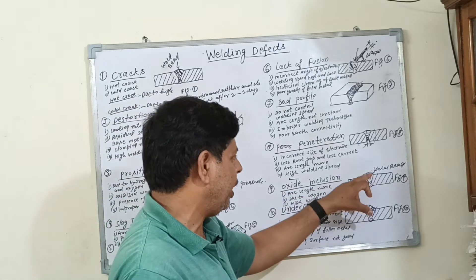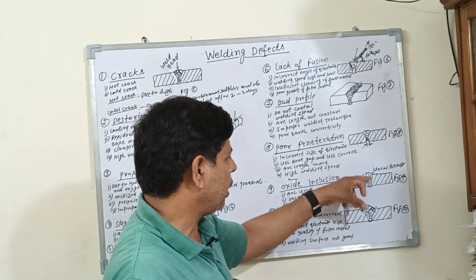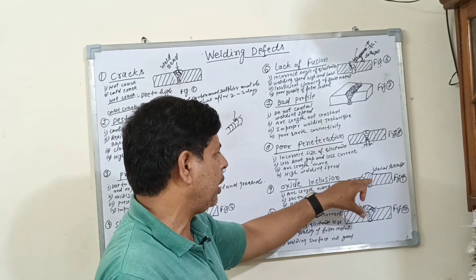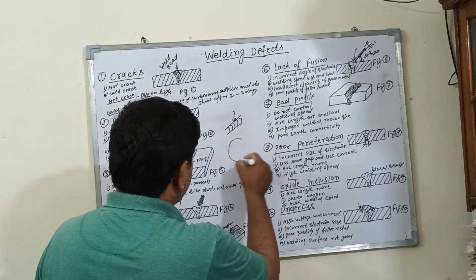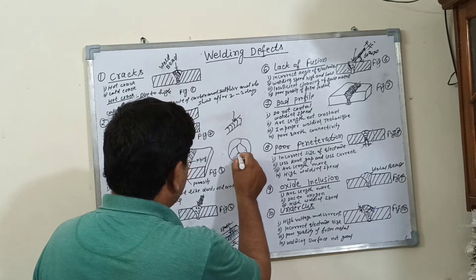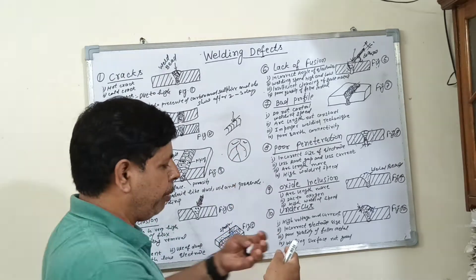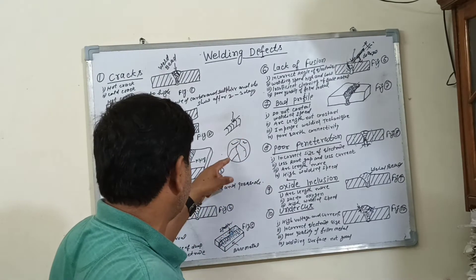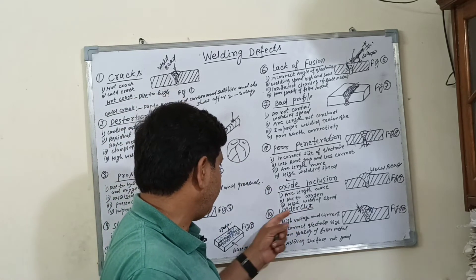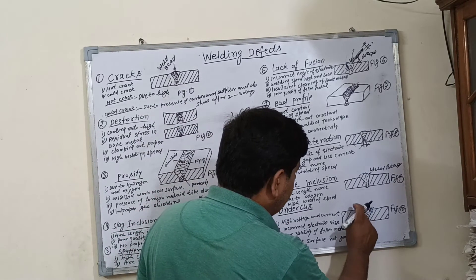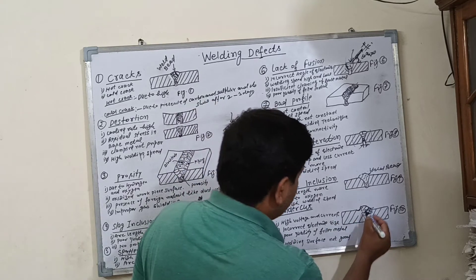Number nine is oxide inclusion. During welding, oxygen tries to enter the welding zone when the shielding is not proper. The oxide layer forms on the workpiece and is not properly mixed with the material. The oxide layer is a very serious problem.